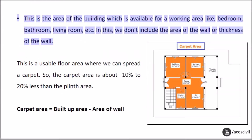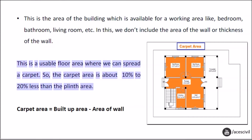This is the area of the building which is available for working areas like bedroom, bathroom, living room, etc. In this, we don't include the area of the wall or thickness of the wall. This is the usable floor area where we can spread a carpet. So the carpet area is about 10% to 20% less than the plinth area.